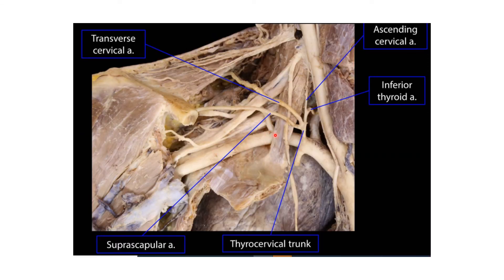In this deeper dissection, we can see the third part of the subclavian artery. The first part is above the scalenus anterior muscle, the second part is posterior to it, and the third part is visible in the supraclavicular triangle. From the first part we see the thyrocervical trunk, which gives rise to the transverse cervical artery — a content of the occipital triangle — and also the suprascapular artery.